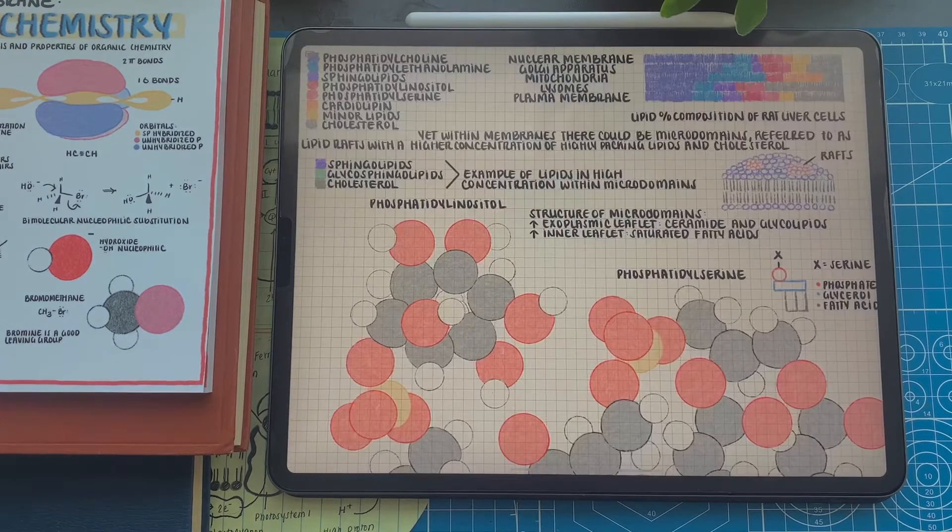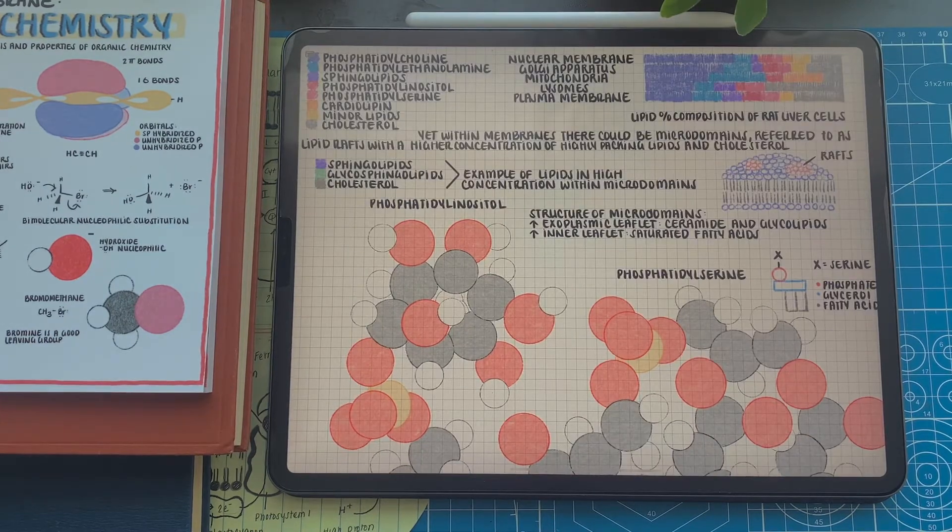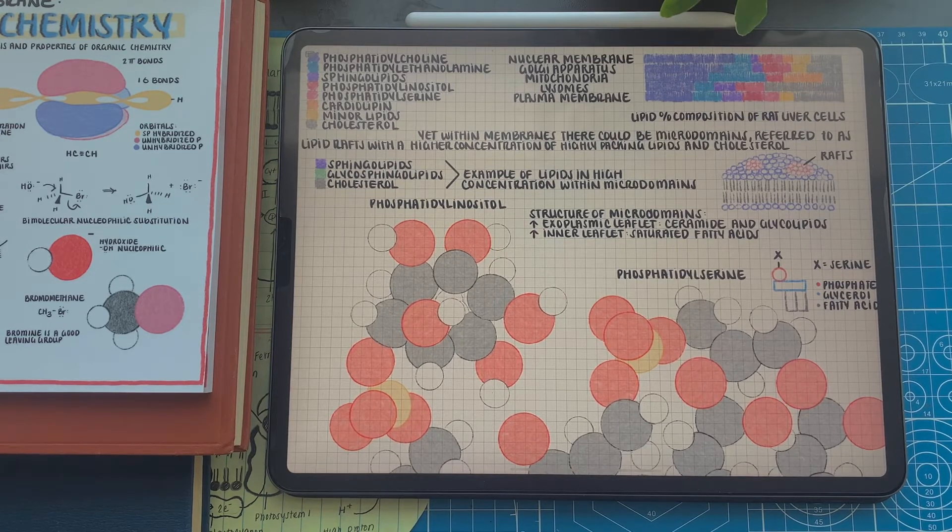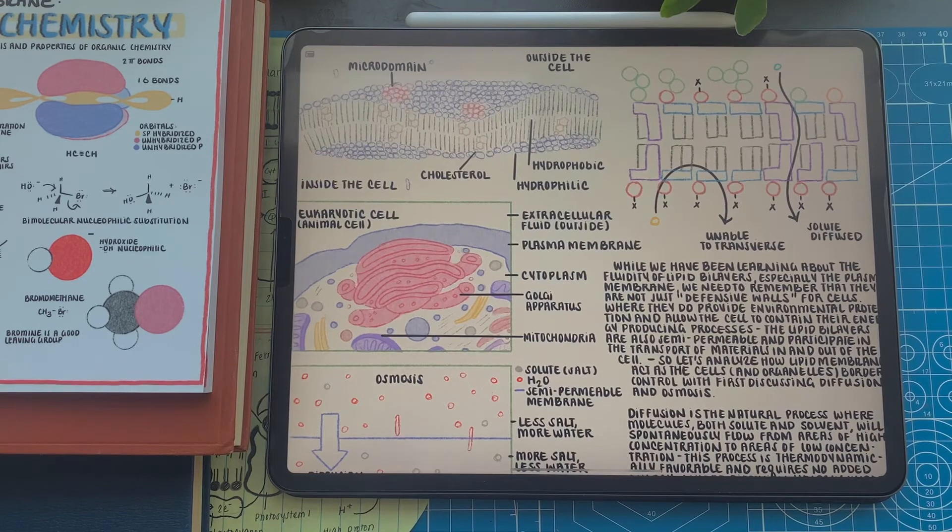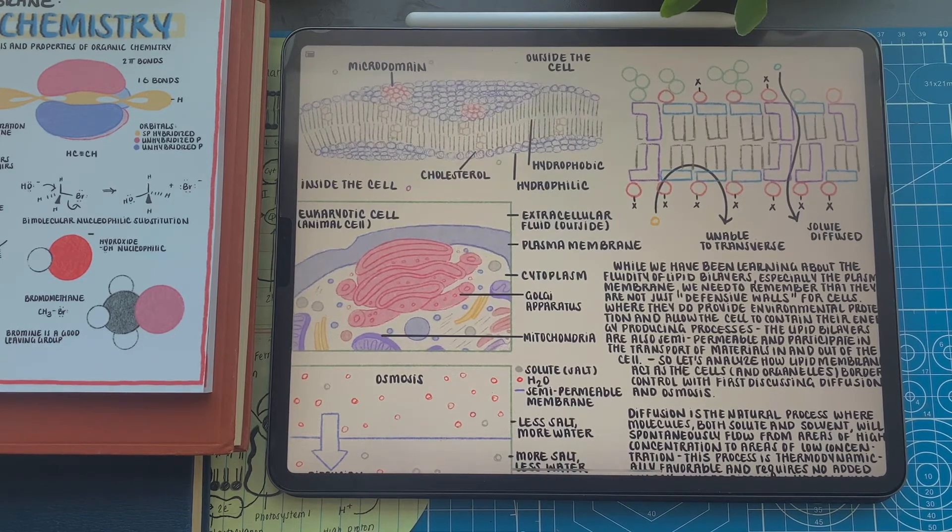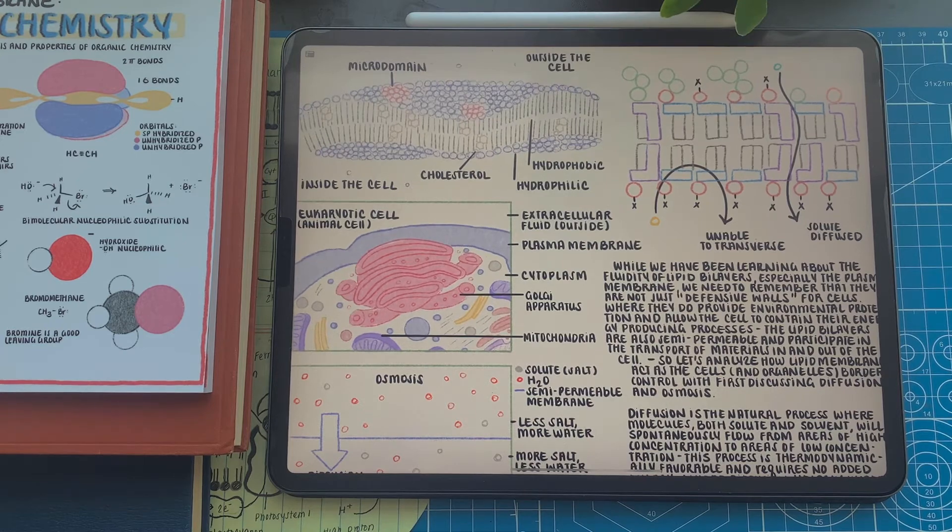Before we continue, let's analyze something that's very crucial to this topic: the different building blocks lipids and proteins are built of. Lipids, as we have seen, are built from the fatty acids extending tails and ranging hydrophilic molecular head groups, such as glycerol, having that amphipathic nature.